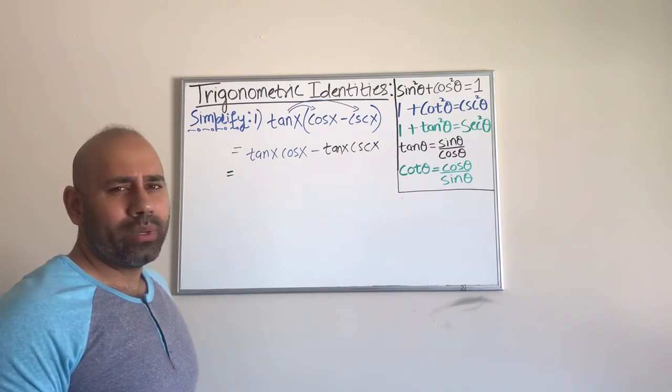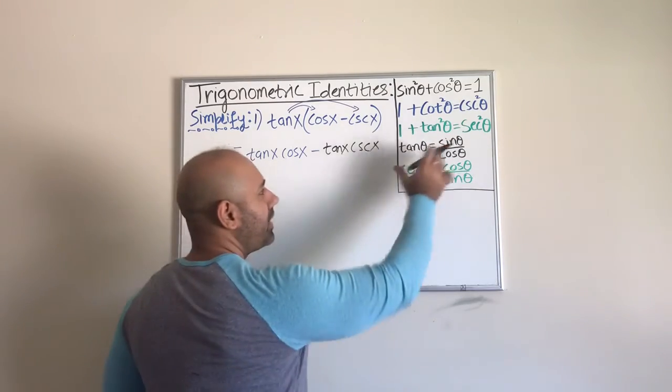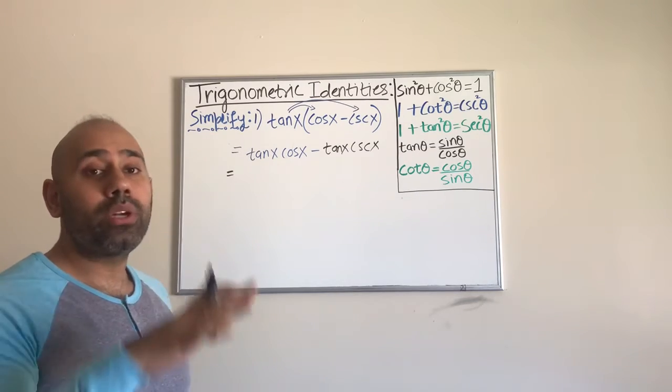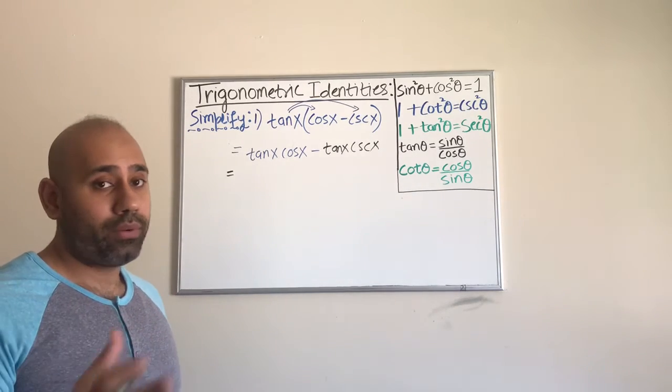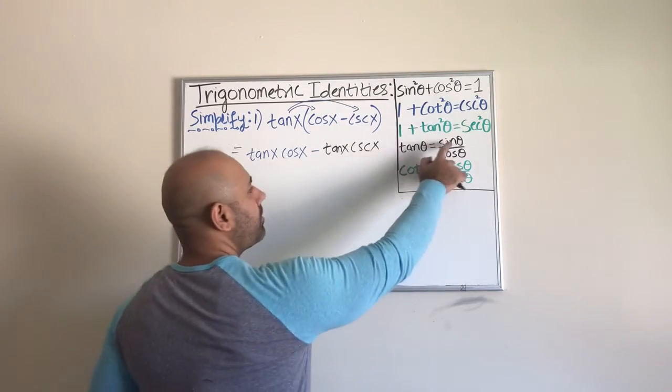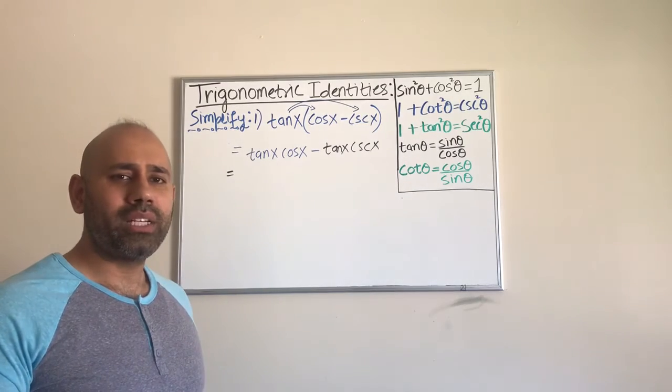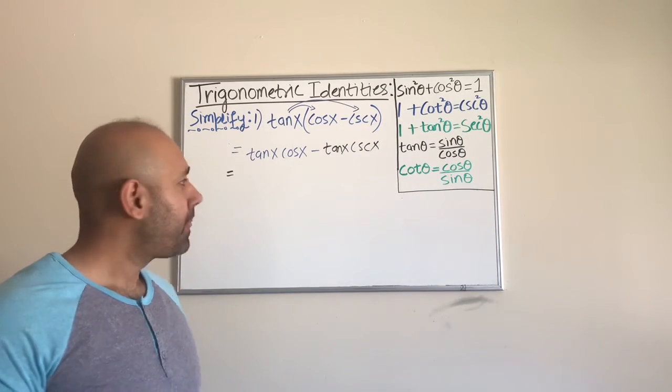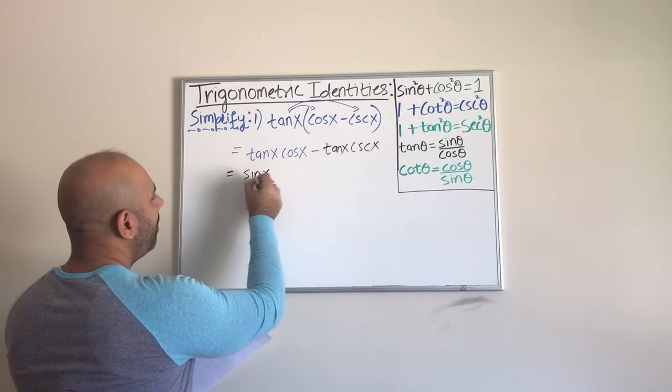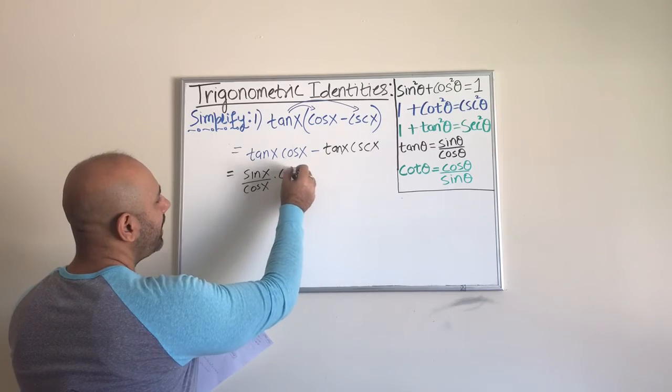I look at the formula sheet - in this case I have these things written here, but in your case you may want to look at the formula sheet if you don't remember all these identities. I see that tangent can be written in terms of sine and cosine, and we want to write most of these things in terms of sine and cosine if possible. So we can write tangent as sin(x) over cos(x), and then I still have times cos(x). There's an invisible times here so I don't have to write it all the time.